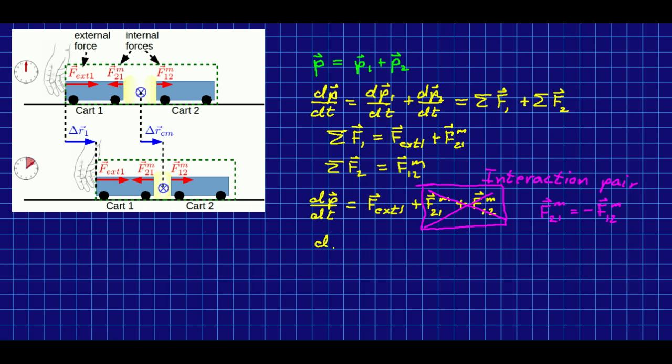And so our rate of change of the system momentum is just the one external force. Well, that shouldn't be all that surprising because we already knew that if a system has no external forces on it, in other words if it's isolated, then its momentum is conserved. In other words, its rate of change of momentum is zero. So it's not all that surprising that the internal forces had to cancel each other out.